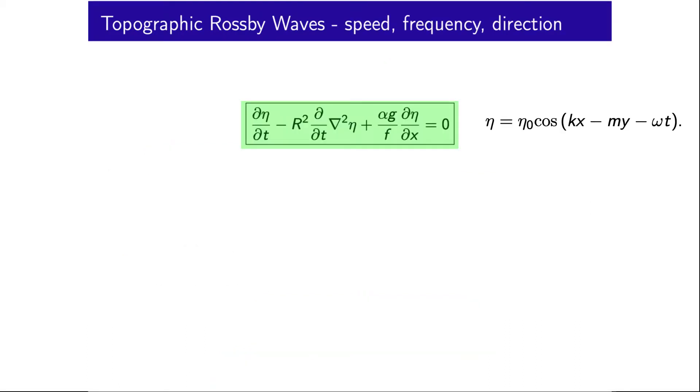So with this wave equation, we can express η as we did before in wave form as some reference η times the cosine of kx minus my minus ωt, where k and m are the along slope and across slope wave numbers respectively, and ω is the frequency.